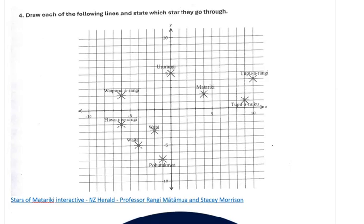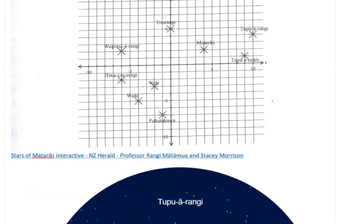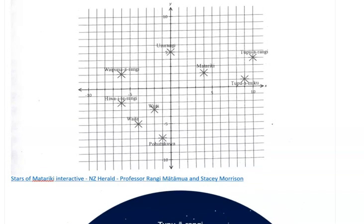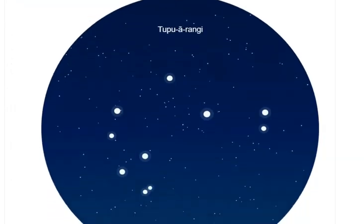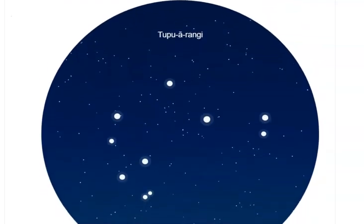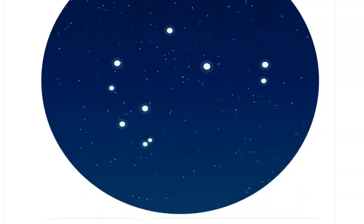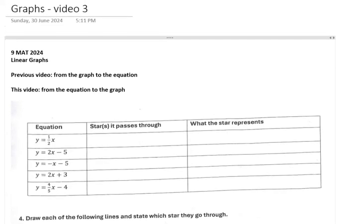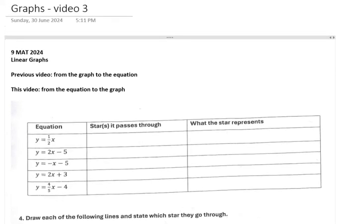Just talking about the Matariki part of the task first, if you're looking for more really cool animation about Matariki there's a lovely interactive on the New Zealand Herald website. If you google Stars of Matariki Interactive you can click on basically what is the little graph that we've given you in the worksheet and it will tell you the story of all of the individual stars, it's pretty cool. That's from Professor Matamua and Stacey Morrison. Okay, now we're going back to the algebra though, so let's go.